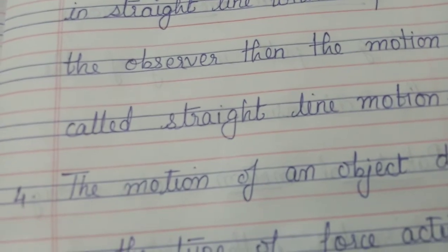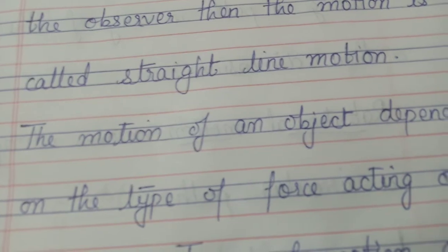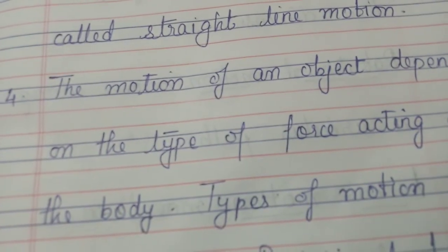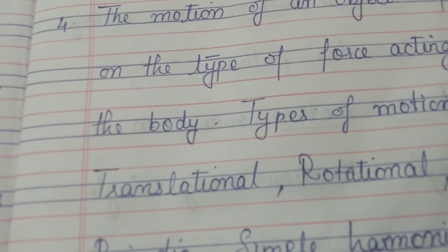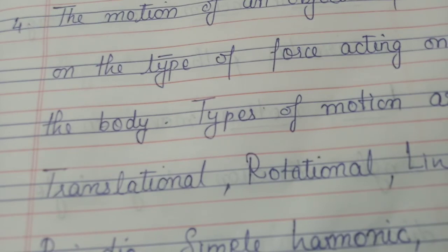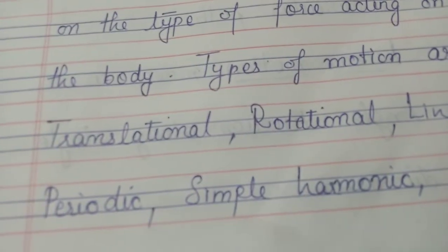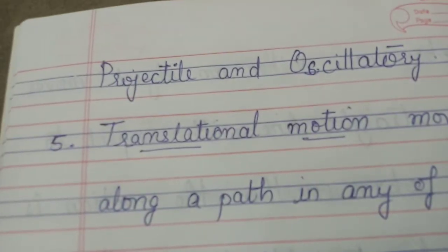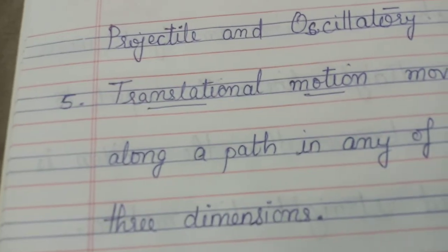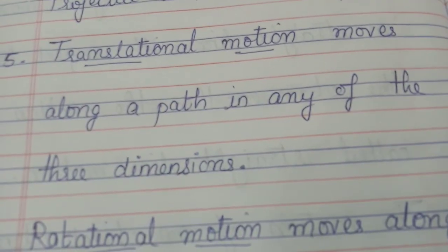The motion of an object depends on the type of force acting on the body. Types of motion are translational, rotational, linear, periodic, simple harmonic, projectile, and oscillatory. Translational motion moves along a path in any of the three dimensions.